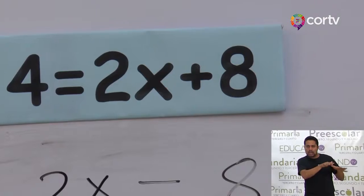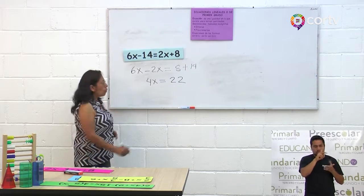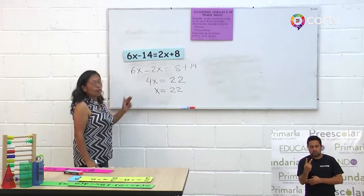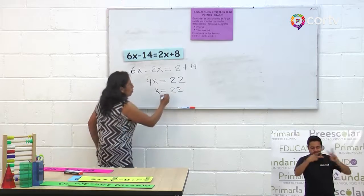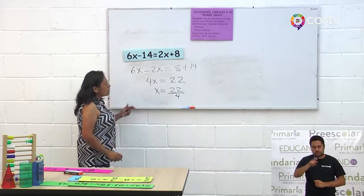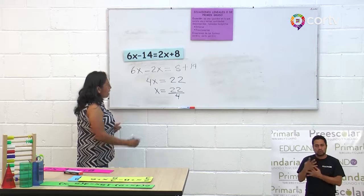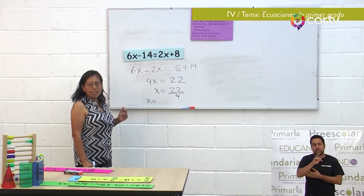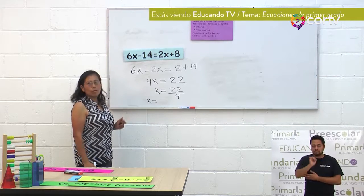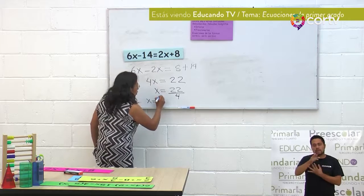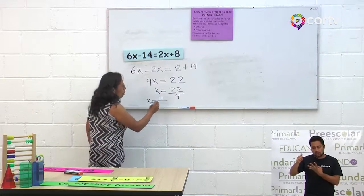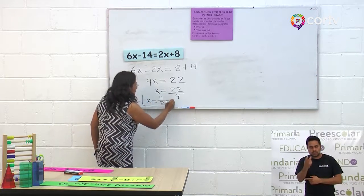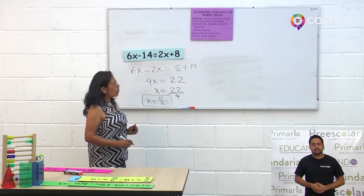Vamos a dejar solita la X para encontrarle su valor. Queda X igual a 22. El 4 está multiplicando y pasa dividiendo. 22 cuartos. Le buscamos su mitad: mitad de 22 es 11, y mitad de 4 es 2. El resultado es 11 medios. Este es el valor de X.